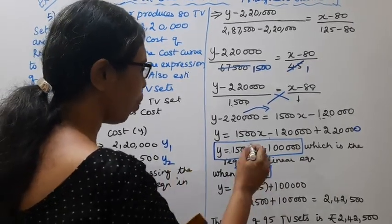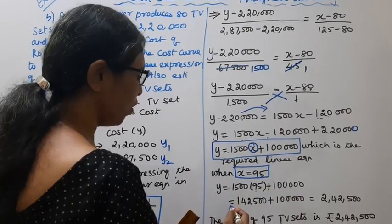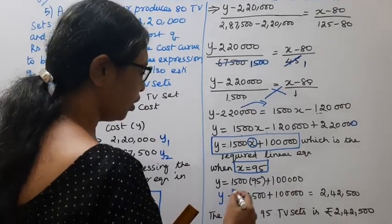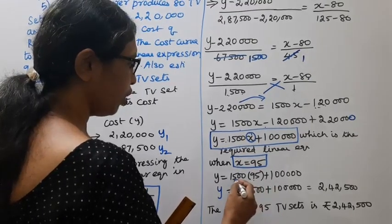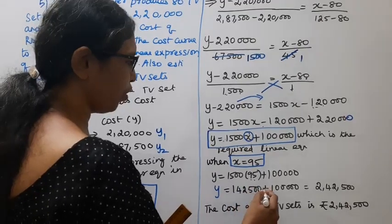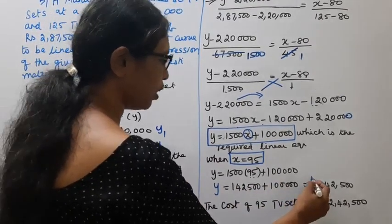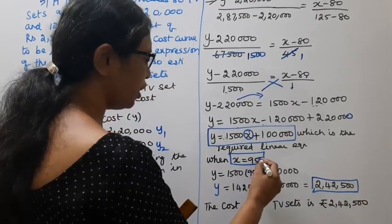Y equal to 1,500 into x. Substitute x as 95 plus 1,00,000. If we multiply, 1,500 and 95 is 1,42,500, plus 1,00,000, that is equal to 2,42,500.